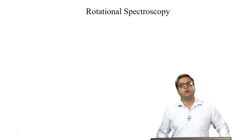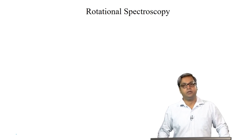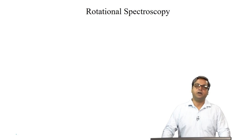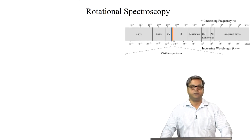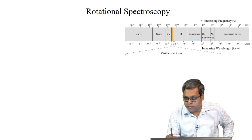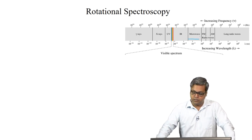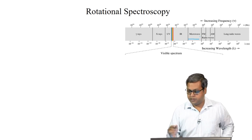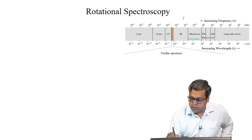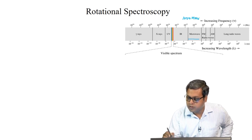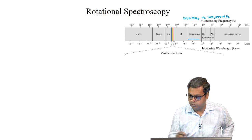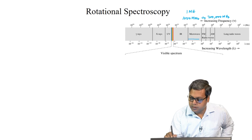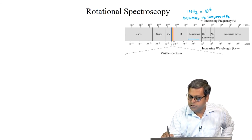As we have already discussed before, we can have rotational spectroscopy in the microwave region of the electromagnetic spectrum. Let us look into the electromagnetic spectrum again. This is the microwave region. The frequency range for the microwave electromagnetic region is from 1000 megahertz to 300,000 megahertz, and we know that 1 megahertz equals 10 to the power 6 hertz.